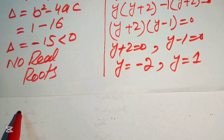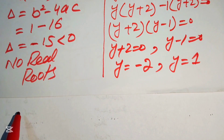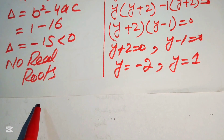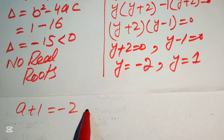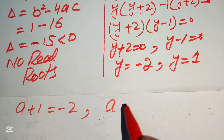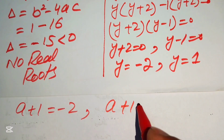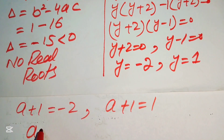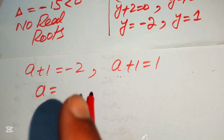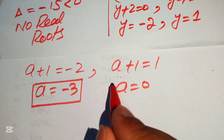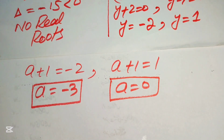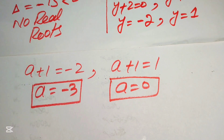Back-substituting using y = a+1: if y = −2, then a+1 = −2, giving a = −3. If y = 1, then a+1 = 1, giving a = 0. So the two values of a are a = −3 and a = 0. Thank you so much for watching — please subscribe for more exciting videos.